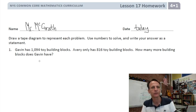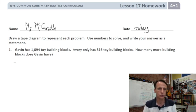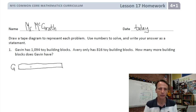Let's dive right in with number one. Gavin has 1,094 toy building blocks. Avery only has, poor fella, 816 toy building blocks. How many more building blocks does Gavin have? Well, this is a pretty straightforward comparison, isn't it? So if we were to draw for Gavin, we'd say, okay, we'll just write G for Gavin and draw ourselves this little tape diagram here.